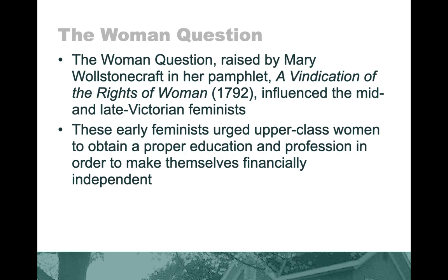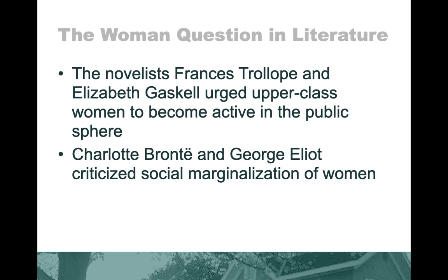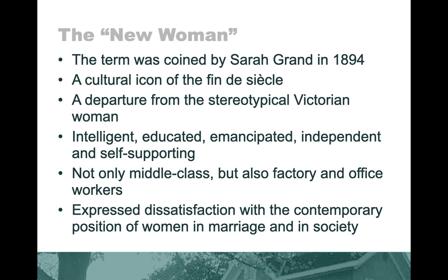Early feminists urged upper-class women to obtain proper education and a profession in order to make themselves financially independent. This is the woman question. Novelists Frances Trollope and Elizabeth Gaskell urged upper-class women to become active in the public sphere, while Charlotte Brontë and George Eliot criticized the social marginalization of women. Please post the heroines of Charlotte Brontë and George Eliot in the comment section.